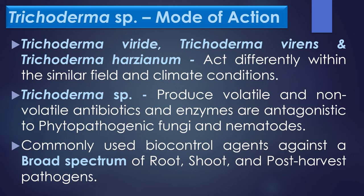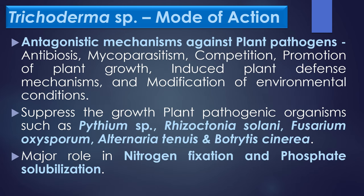Trichoderma species are the most commonly used biocontrol agents against a broad spectrum of root, shoot, and post-harvest pathogens. Trichoderma species employ several antagonistic mechanisms against plant pathogens, including antibiosis, mycoparasitism, competition for nutrients and space, promotion of plant growth, induced plant defense mechanism, and modification of environmental conditions. Researchers have reported that Trichoderma species suppress the growth of plant pathogenic organisms such as Pythium species, Rhizoctonia solani, Fusarium oxysporum, Alternaria tenuis, and Botrytis cinerea. Trichoderma species also play a major role in nitrogen fixation and phosphate solubilization.